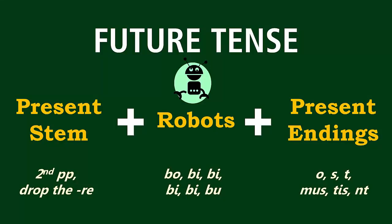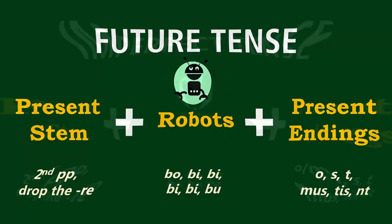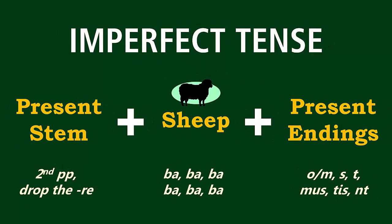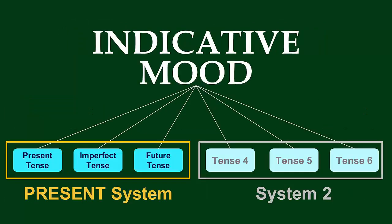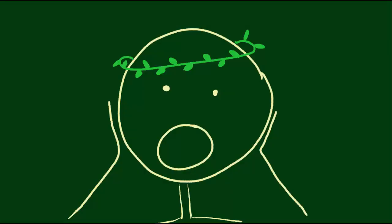So, last time on Agora Academy, we learned the rules for forming the future tense endings. And today, we're going to look at the endings chart and then figure out how to translate the endings — the same thing we did with the imperfect endings. In the upcoming lessons, we'll review the entire present system and think of all three tenses — the present, imperfect, and future — as working together. So if you feel like you're still getting things a little mixed up, that's okay. This is all still new, and there's more review coming.